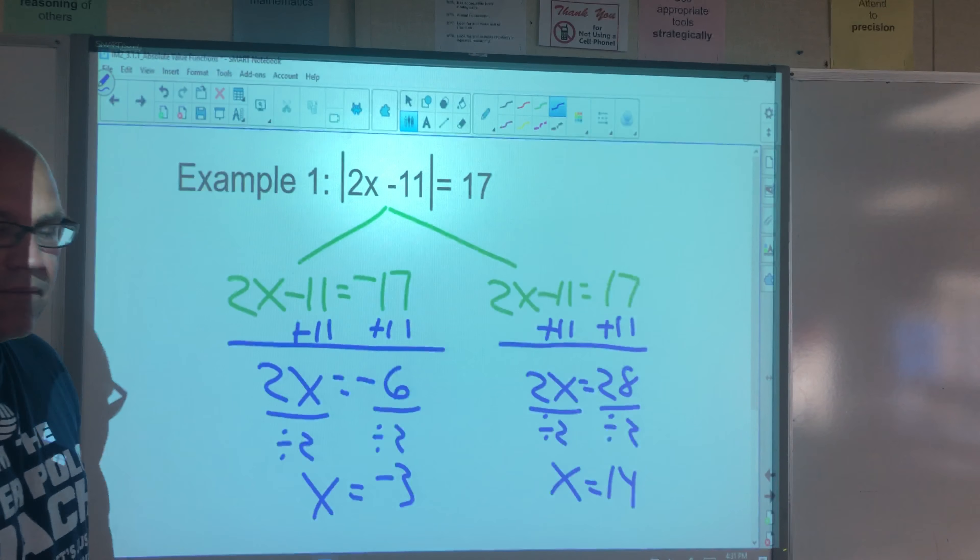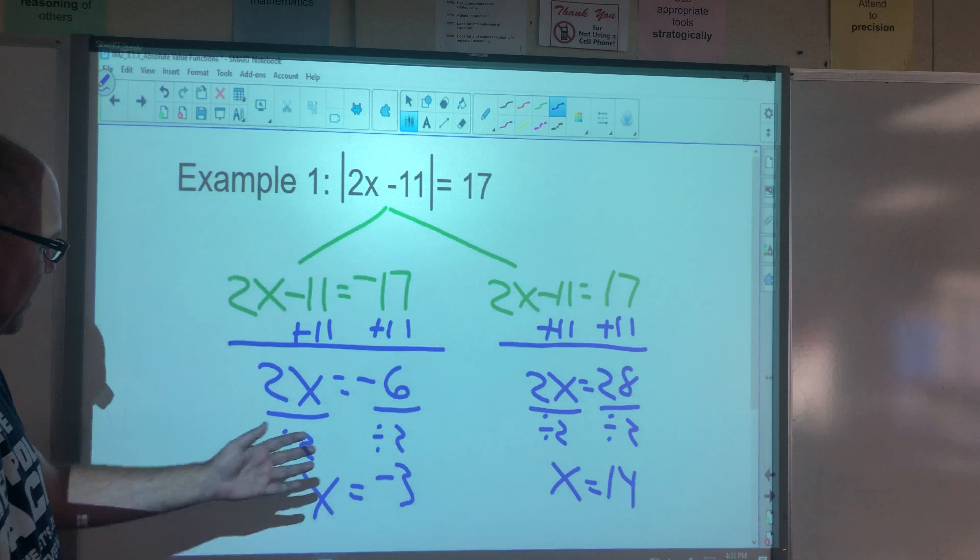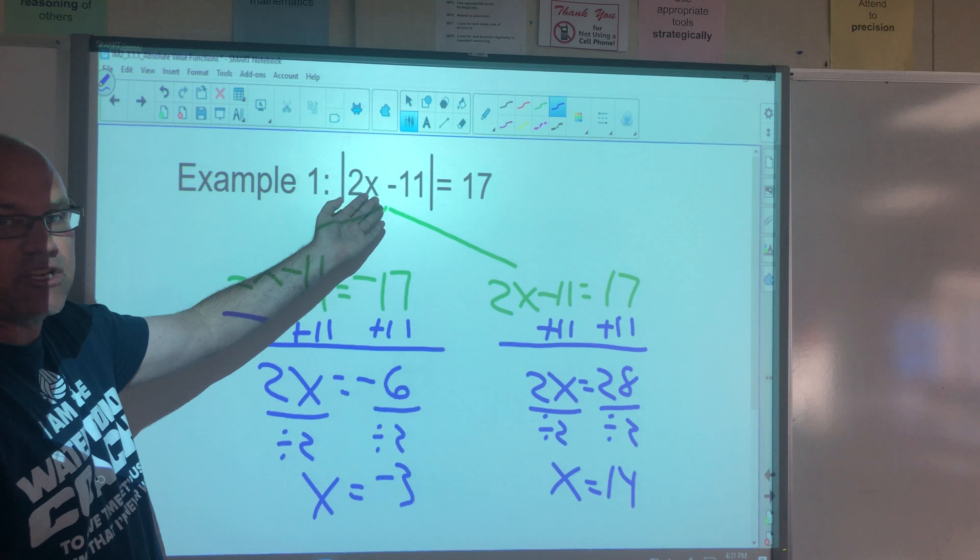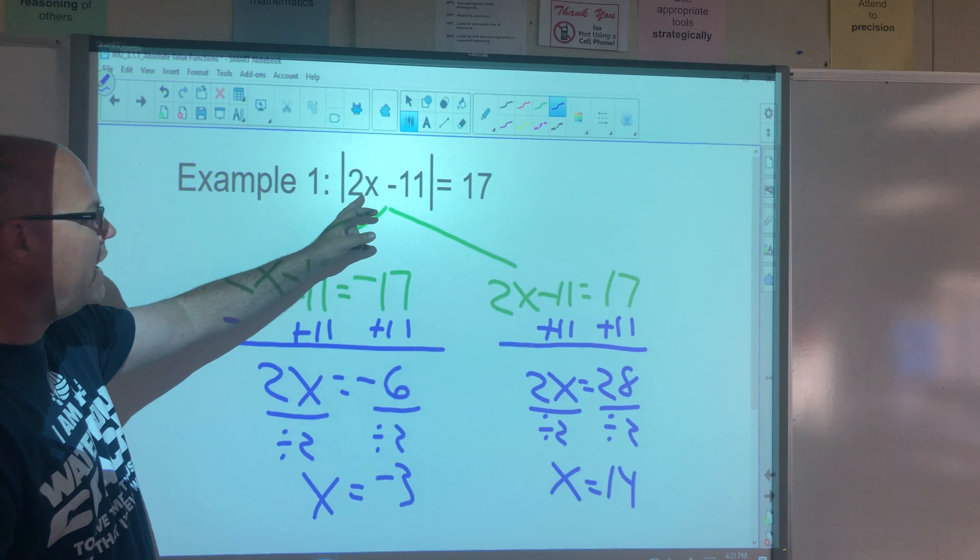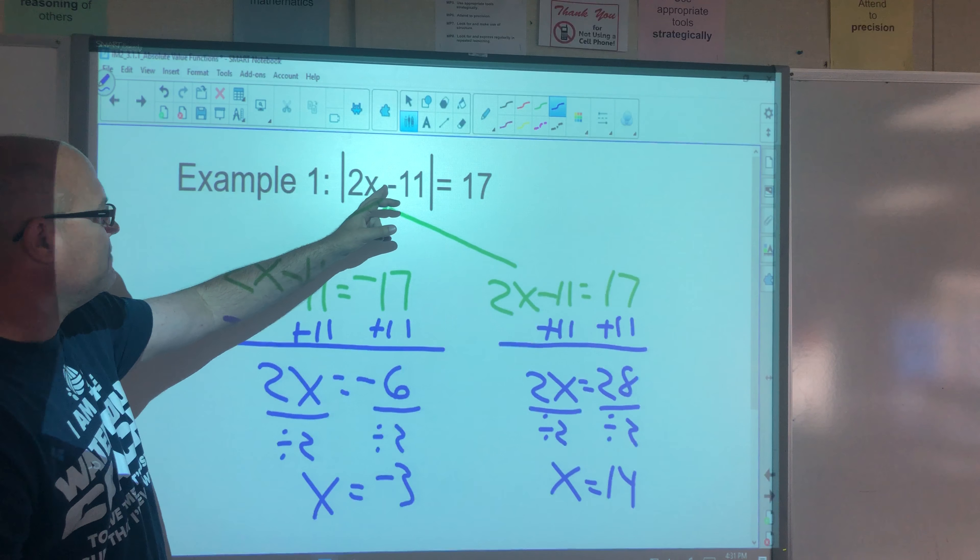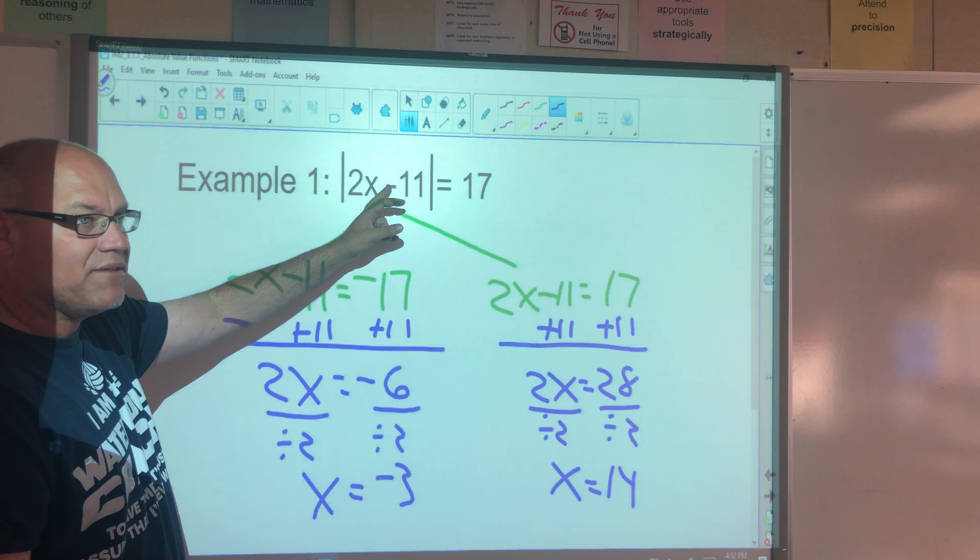Can we check these? Correct. We can check them. We simply substitute back into the original equation and see if it's true or not. So we substitute negative 3 for x. 2 times negative 3 is negative 6. Negative 6 minus 11, negative 17. Absolute value negative 17 is 17. Check.